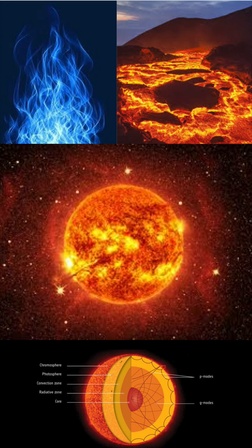On Earth, there are some extremely hot things, such as fire, ranging from 600 to 3,000 degrees Celsius.